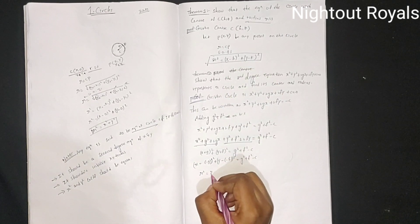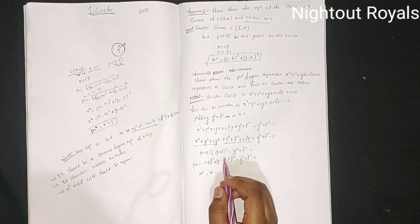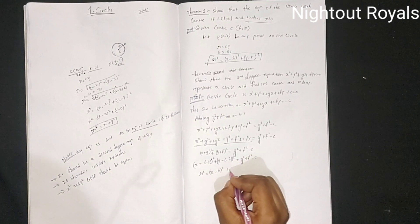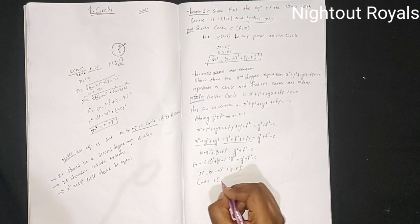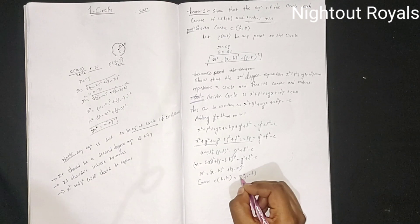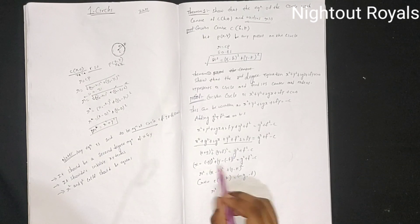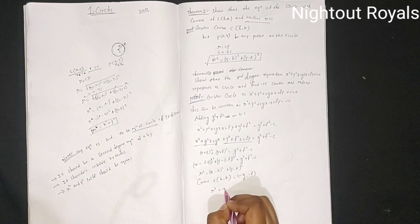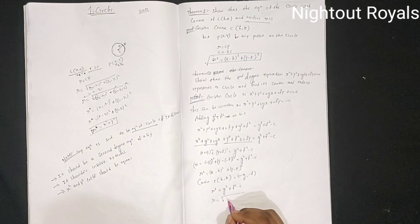This can be written as (x - (-g))² + (y - (-f))² = g² + f² - c, which is in the standard form (x - h)² + (y - k)² = r². So the center C(h, k) = (-g, -f), and the radius r = √(g² + f² - c). This completes Theorem 2.